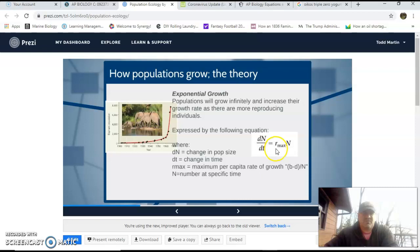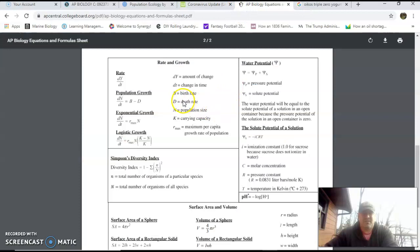So exponential growth rate, the formula for it is Rmax times N, and Rmax is the maximum per capita growth rate of growth. So the number of births minus deaths out of the population. And again, if you're looking for these definitions of things, they are given to you underneath birth rate, death rate, and population size. There's your B or D and your N.